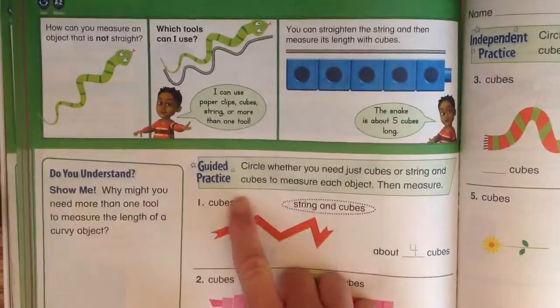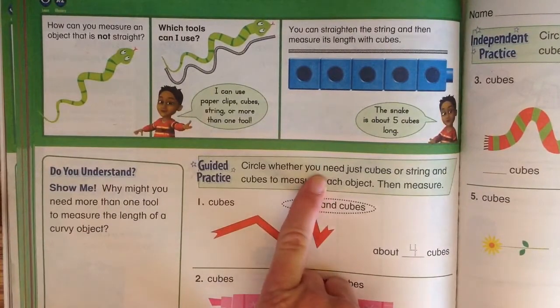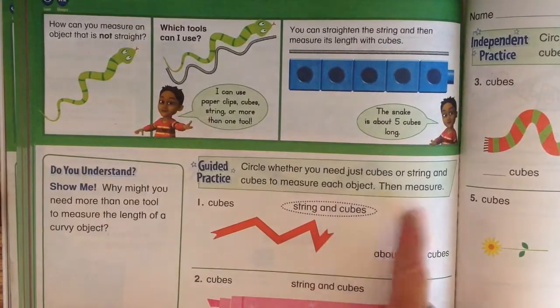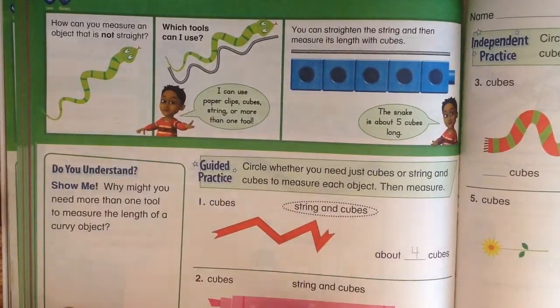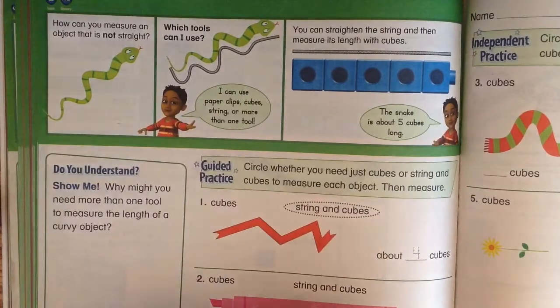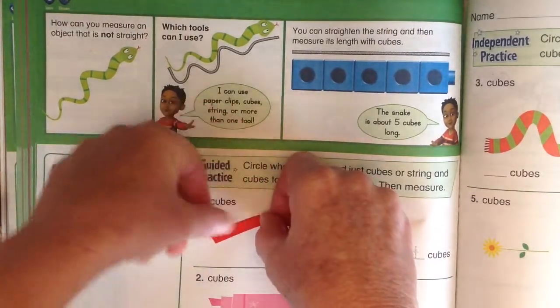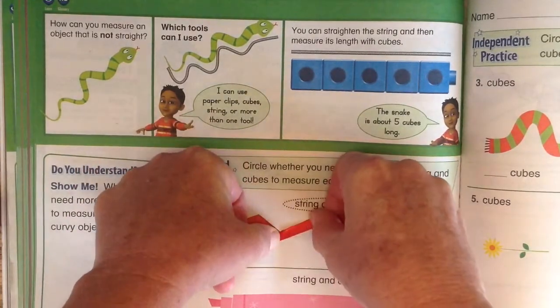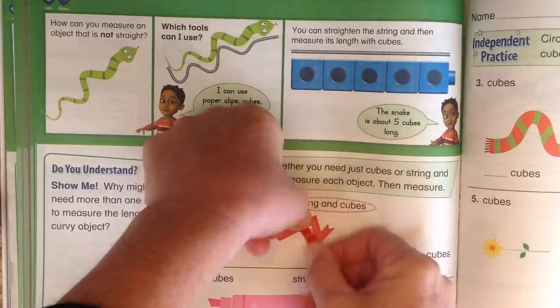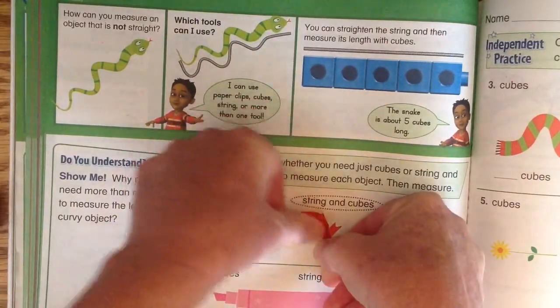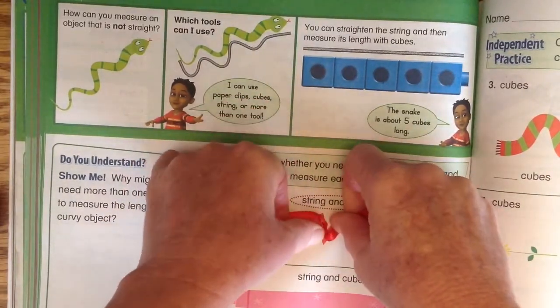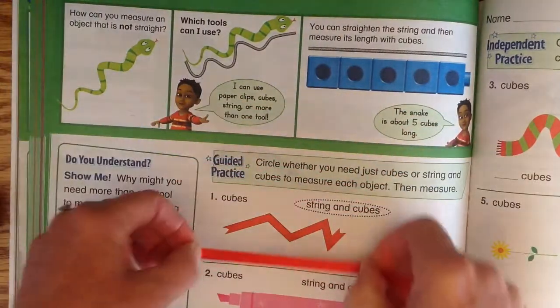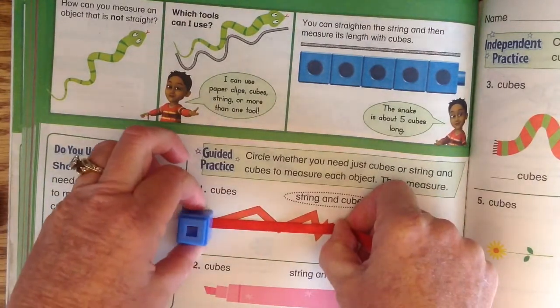So it says circle whether you need just cubes or string and cubes to measure each object, then measure. Well this one is not straight, so I'm gonna need both. I'm gonna take my string and go to the corner and to this corner and up to that corner, down to that corner, and then up to that corner. That's about where I stopped. So now that I put it all straight, now I can put the cubes on it.